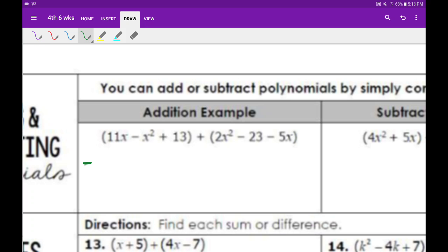I'm going to combine the like terms starting with the highest exponent. So here we have a negative x squared and a 2x squared. When I combine those, I get an x squared.